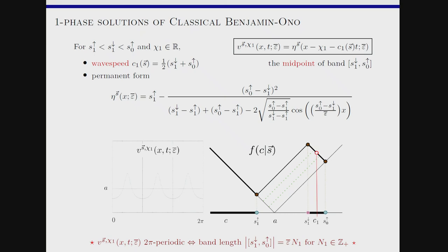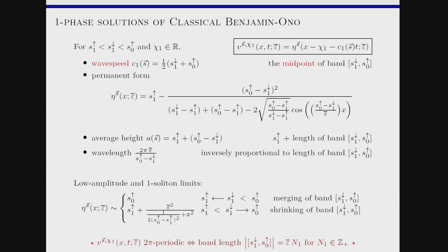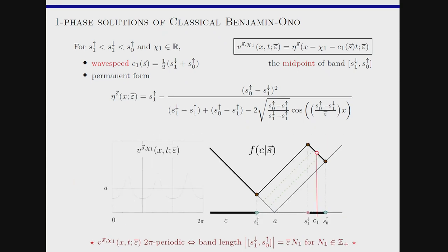I need to tell you the wave speed and the permanent form. The wave speed is the average value of S1-down and S0-up. The permanent form is written through a nice cosine — it's definitely not horrendous if you compare it to the KdV equation, where you need elliptic functions to write down the periodic traveling wave. Very importantly, the wavelength is proportional to epsilon-bar, so at low epsilon this solution doesn't actually exist anymore.